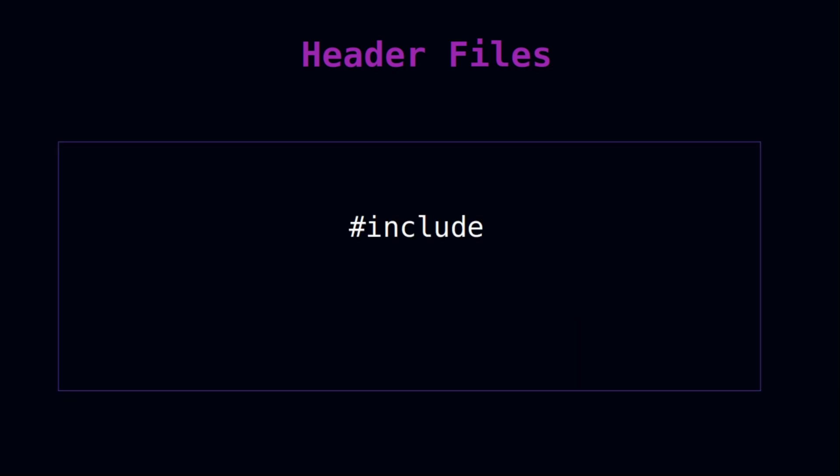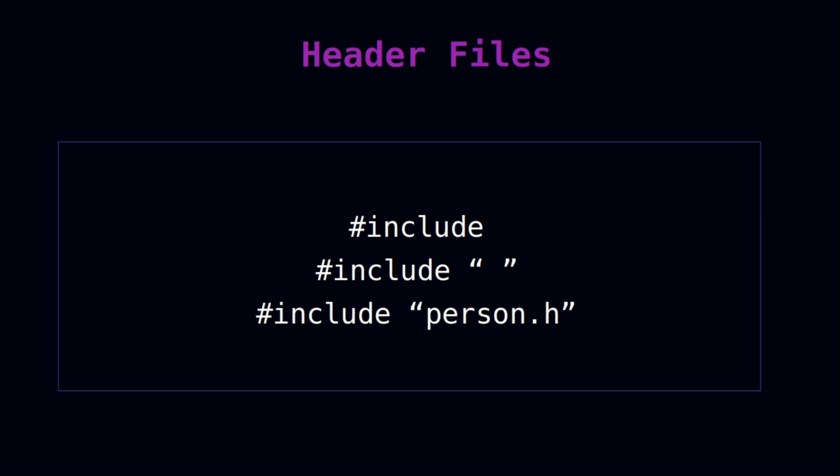Sometimes the C++ built-in library will limit you, so you need to create your own to fit your needs. For a custom library, you also use hash include, but instead of angle brackets you use double quotes, and inside the double quotes you specify the library name. You'll notice the dot-h extension — every file must have an extension, so header files use the .h extension.